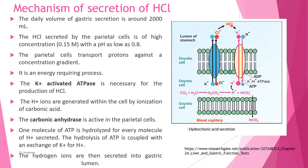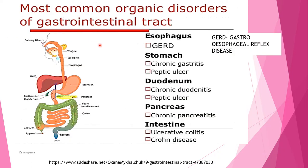The most common disorders of the gastrointestinal tract are: at the esophagus, GERD — gastroesophageal reflux disease; at the stomach, chronic gastritis and peptic ulcers; at the duodenum, chronic duodenitis and peptic ulcer; at the pancreas, chronic pancreatitis; and in the intestines, ulcerative colitis and Crohn's disease. These are the common disorders seen at the gastrointestinal tract.